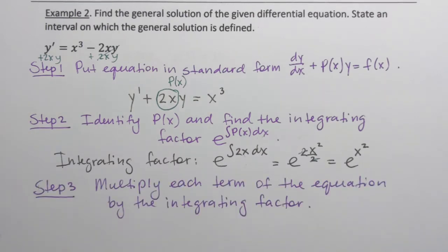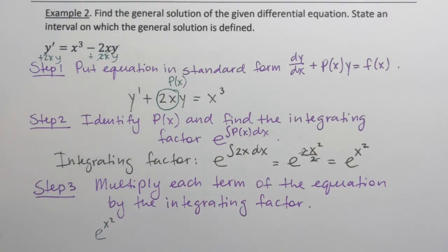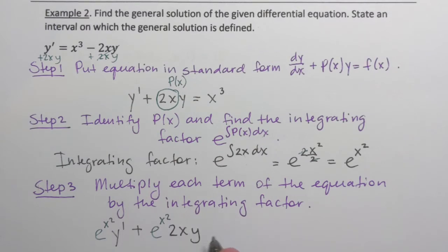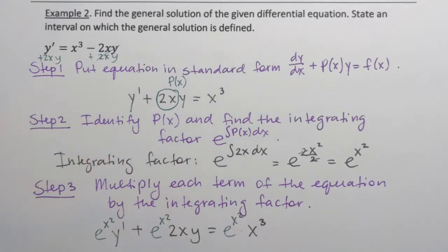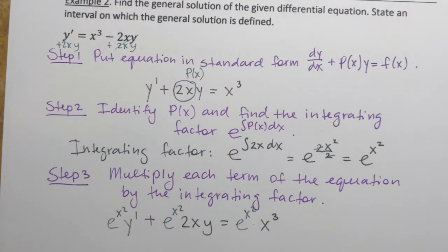Step 3: we need to multiply each term of the equation by the integrating factor. So e to the power x squared multiplied by y prime, plus e to the power x squared multiplied by 2xy. The right-hand side is also multiplied by the integrating factor: e to the power x squared times x cubed. There's nothing to simplify here, so step 3 is done.